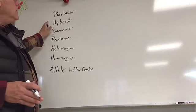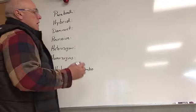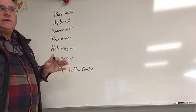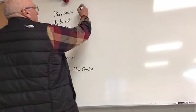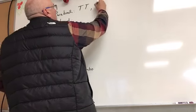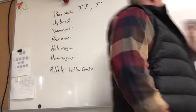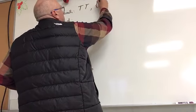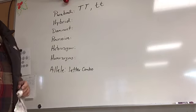For purebred, there are two different types. We're going to use the letter T today to keep things easy. For an organism to be purebred, the two options are capital T capital T, or lowercase t lowercase t. Anytime you see that allele combination, you know that organism is purebred for that trait.